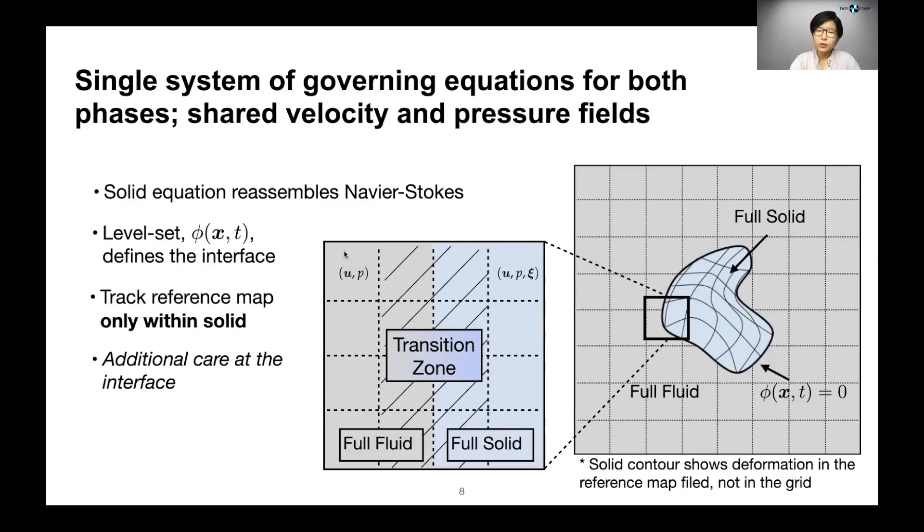This transition zone makes our method a blurred interface method. However, the width of the transition zone is defined with the grid size. So as we refine the grid, the transition zone will shrink down and there we will recover a sharp interface between fluid and solid.